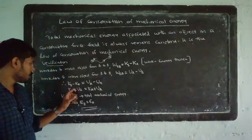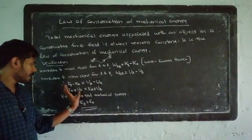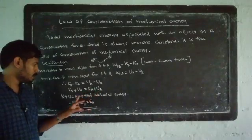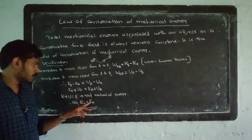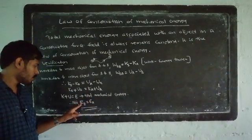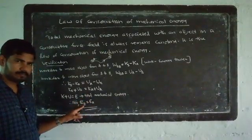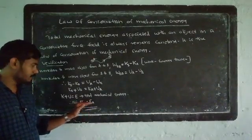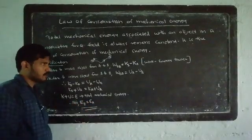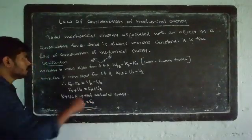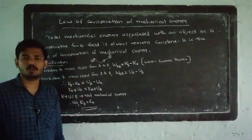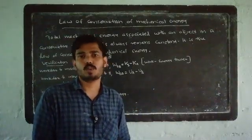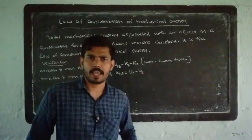KB plus UB is the total mechanical energy at point B, that is E_B, and KA plus UA is the total mechanical energy at point A, that is E_A. Final mechanical energy equals initial mechanical energy. So mechanical energy remains constant in a conservative force field — this is the Law of Conservation of Mechanical Energy.